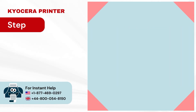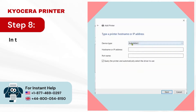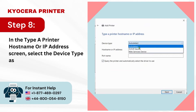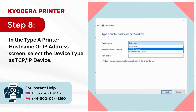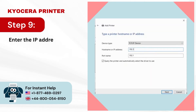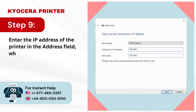Step 8: In the Type A Printer Hostname or IP Address screen, select the device type as TCP/IP Device. Step 9: Enter the IP Address of the printer in the Address field, which can be obtained from the printer.